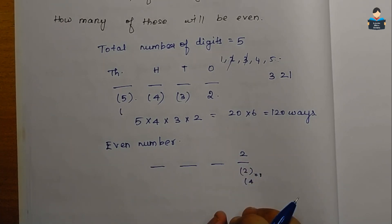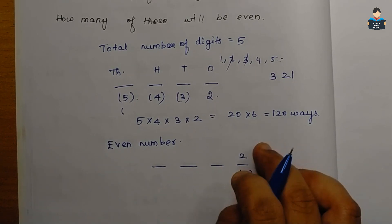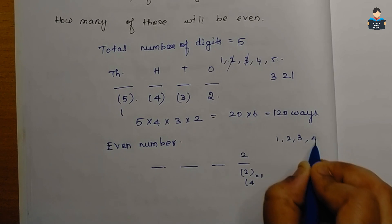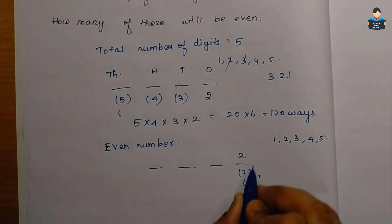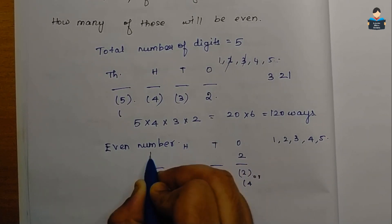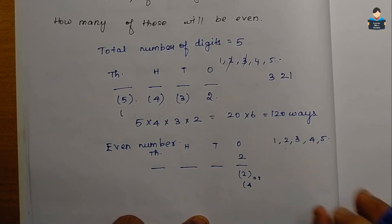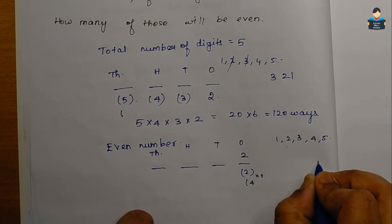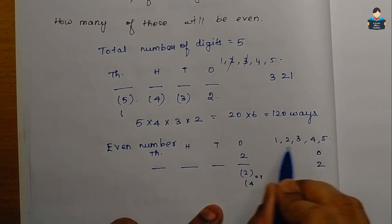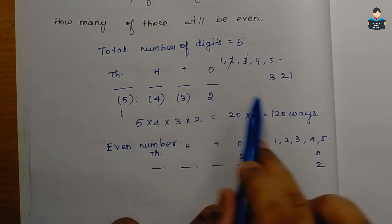We fill in the 1s place first with either 2 or 4 — that gives us 2 choices. Now for the remaining three places, we use the leftover digits. The 1s place is fixed with 2 ways.